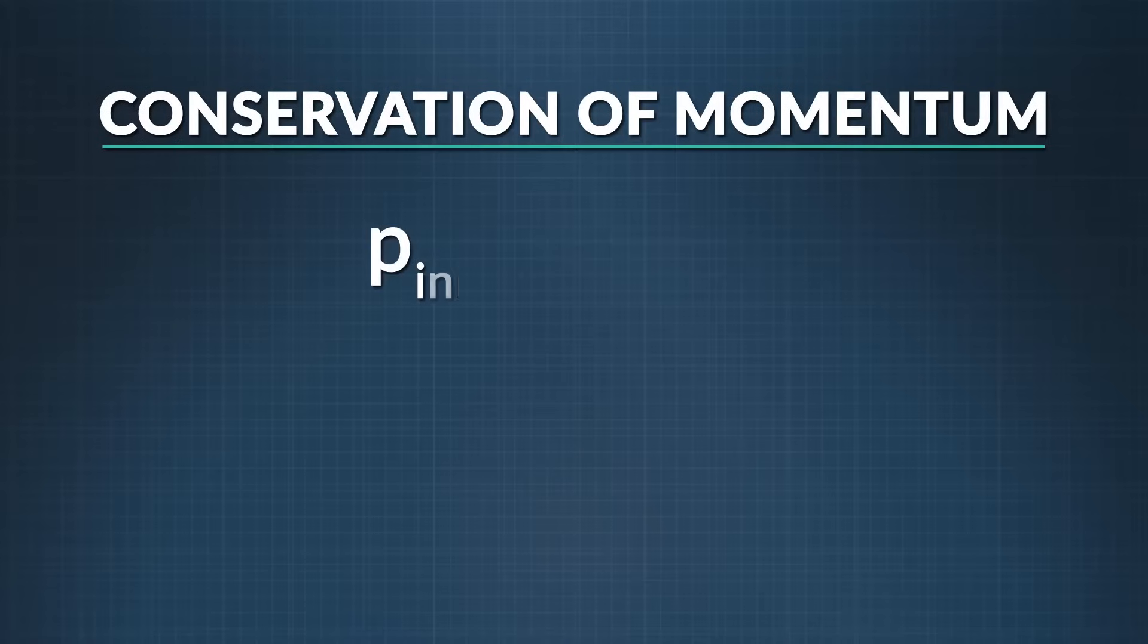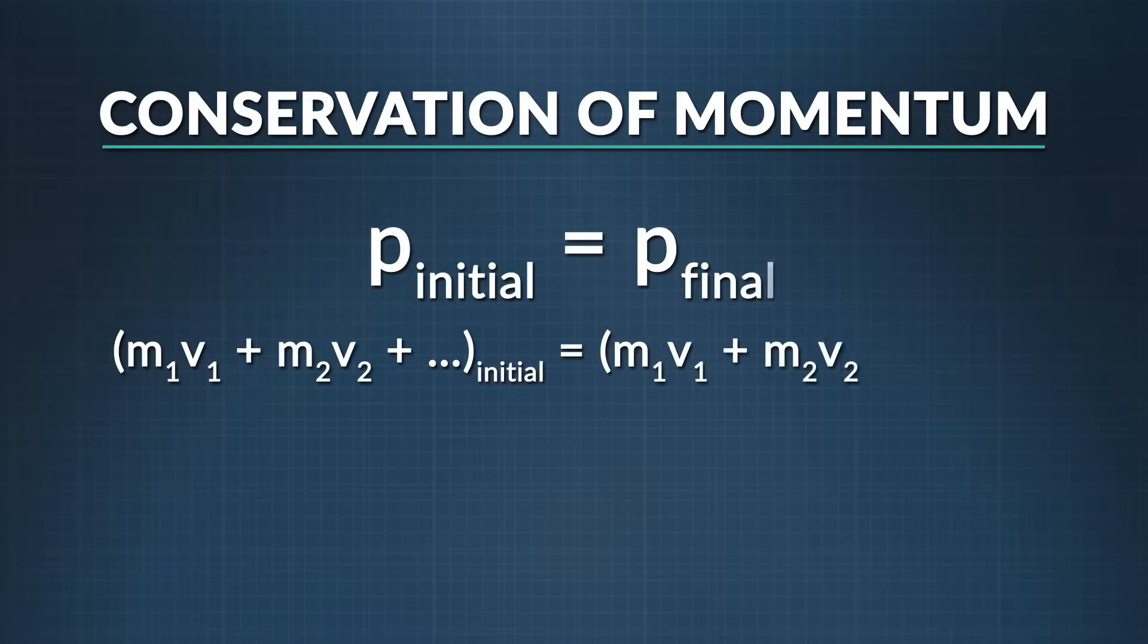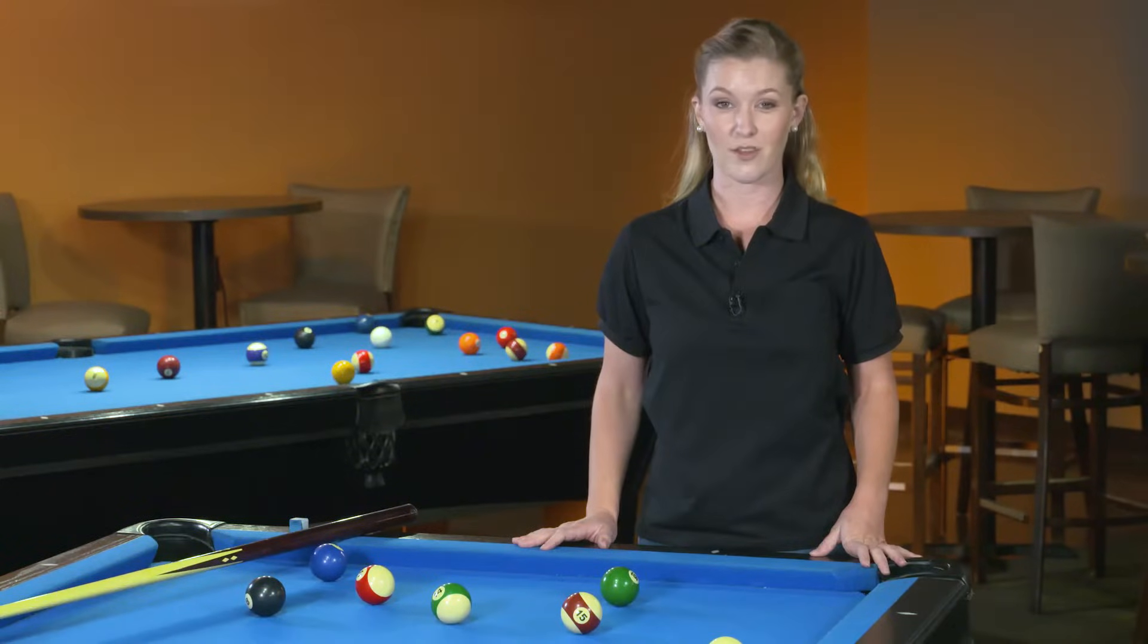In equation form, we see that the total momentum, P, before objects interact with one another, is equal to the total momentum of all the objects after they interact. Now, ready to try solving a problem?